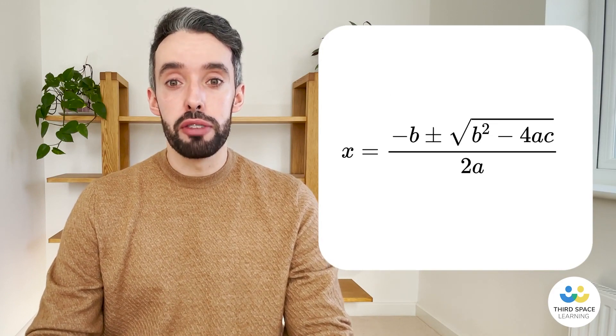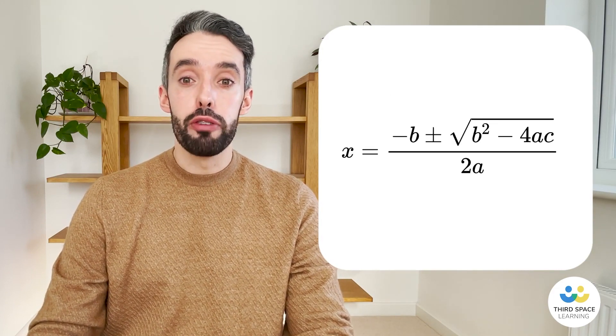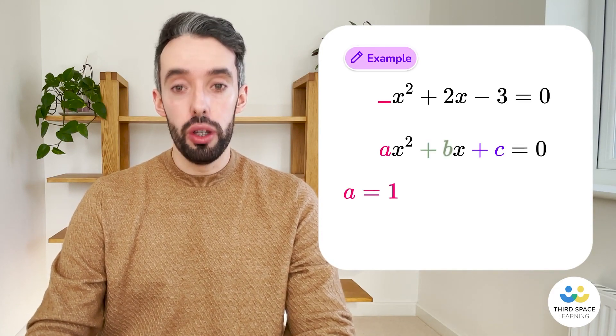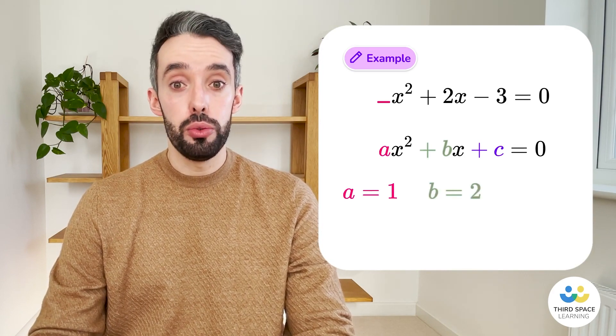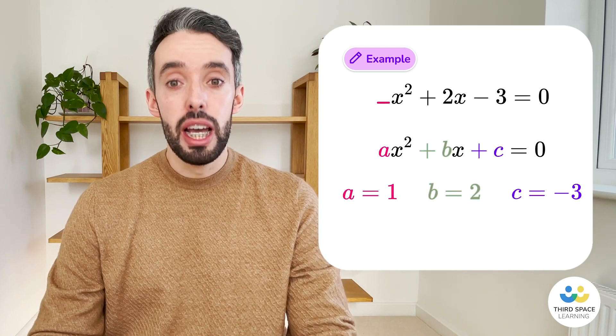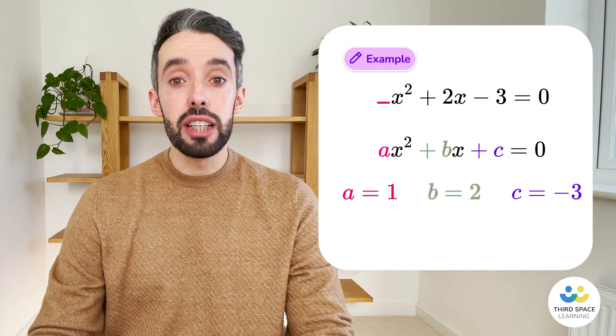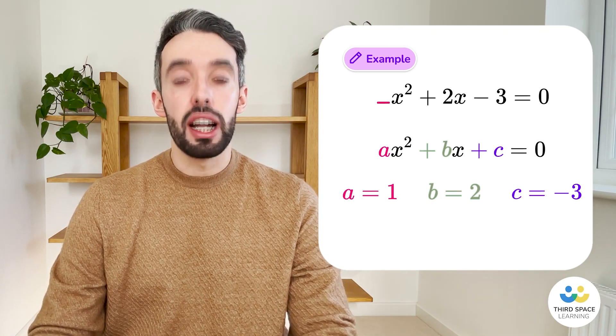Now let's solve it using the quadratic formula, where a is the coefficient of x squared, in this case 1, b is the coefficient of x, in this case 2, and c is the constant term. Now we substitute those values into the quadratic formula, and then we evaluate it.